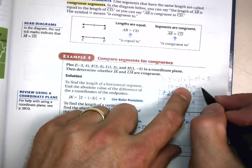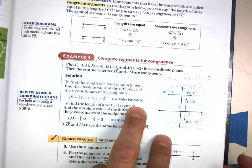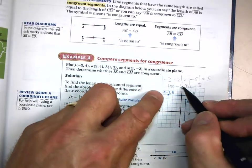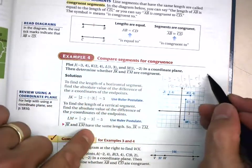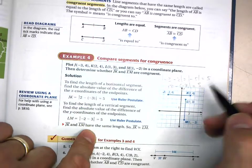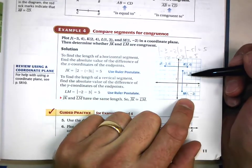We could switch that around—we could have said 2 minus negative 3. Remember, minus a negative gives us a positive, so 2 plus 3 is 5. It doesn't matter what the order is as long as you take the absolute value at the end. That's why distance is always positive.